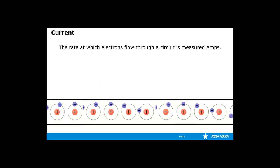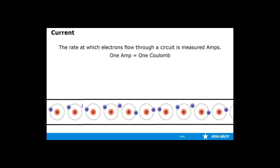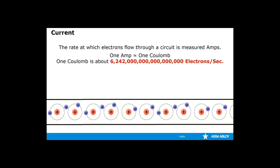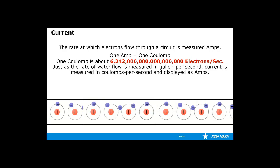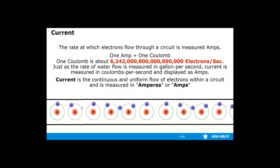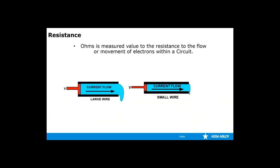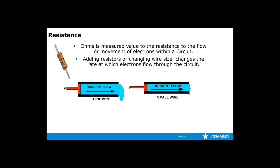The rate at which electrons flow through a circuit is measured in amps. One amp is one coulomb. One coulomb is about 6.242 quadrillion electrons per second. Just as the rate of water flow is measured in gallons per second, current is measured in coulombs per second and is displayed as amps. Current is the continuous and uniform flow of electrons within a circuit and is measured in amps or amperes. Ohms is the measured value of resistance to the flow or movement of electrons within a circuit. Adding resistors or changing the wire size changes the rate at which the electrons flow. Resistance is measured in ohms.